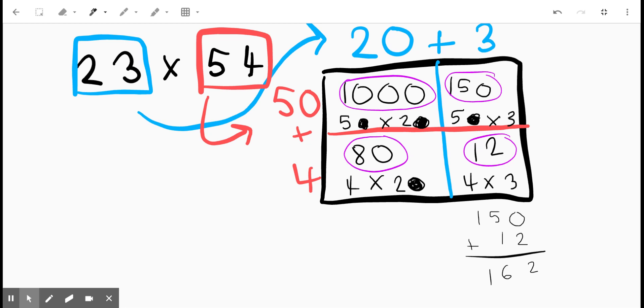I added the partial product 150 to the partial product 12 and I got 162, but I'm not quite done yet because I still have to add my 1000 and my 80. Once again I'm really being careful about lining my digits up. 1000 plus 80 is going to give us 1080. And so now all that's left to do is to add these two sums together and that's going to give us our product.